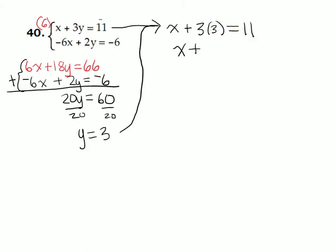Well, 3 times 3 is 9, and 2 plus 9 is what gives us 11. So the x coordinate is 2. Write your answer as an ordered pair, always put x first and y second, and so our ordered pair solution is 2 comma 3.